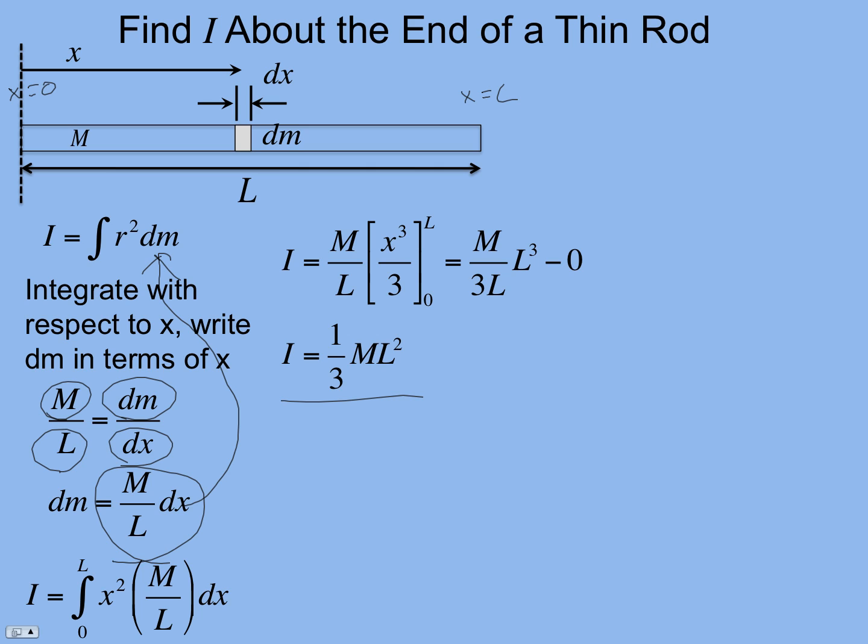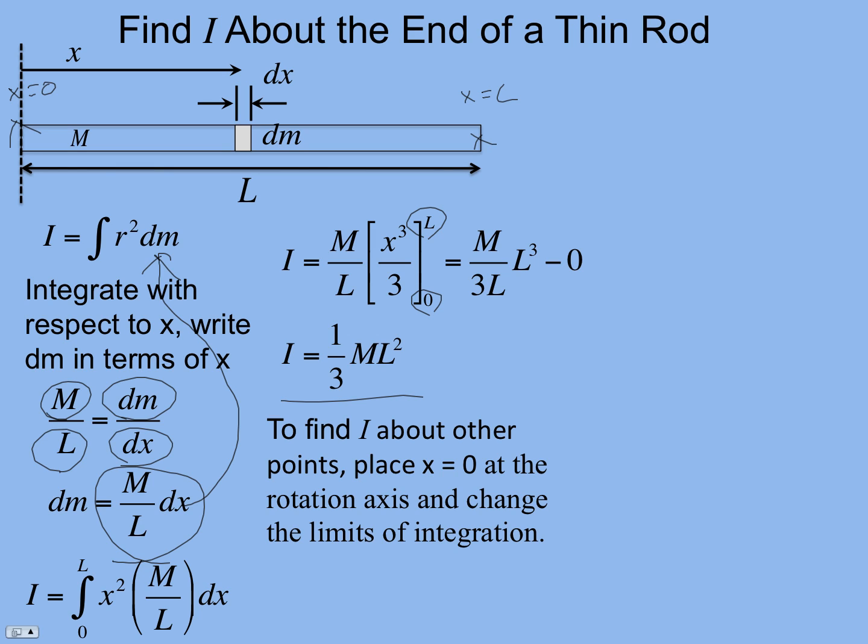So no matter what point you're summing the rotational inertia about, all these steps are the same, except this last step, it's what these limits are. They're always going to be the limit from one end to the next, measured relative to the point you're summing the inertia about. So let's see if we can come up with the rotational inertia about the center, which we know, and we knew this, right? That's the way that should come out.